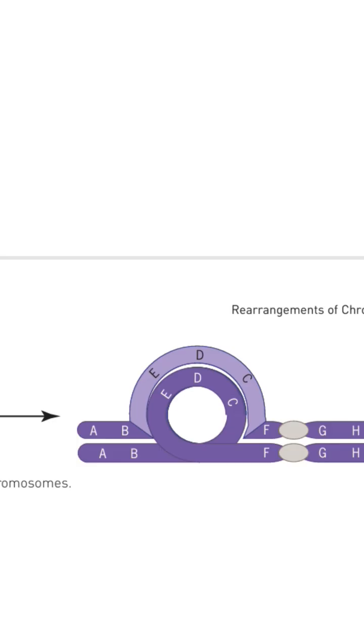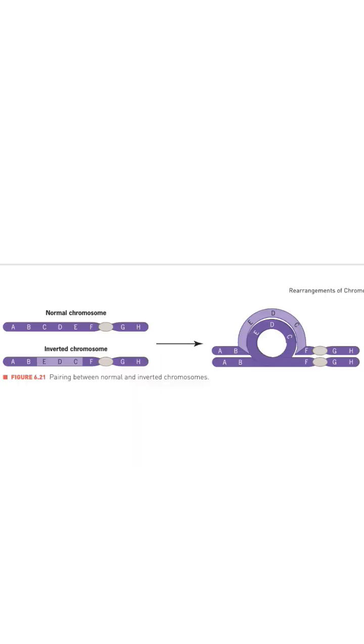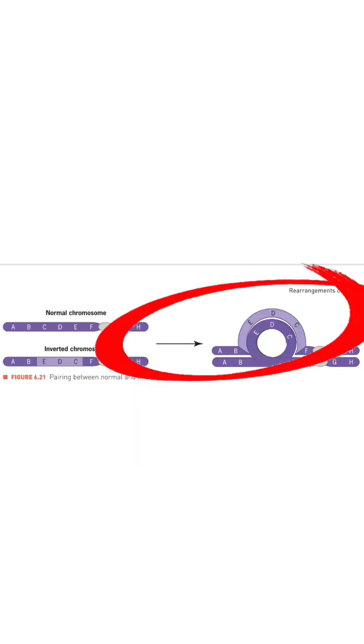However, because of the inversion, the chromosome must form a loop to allow for pairing in the region where genes are in reverse order. In this pairing configuration, only one of the chromosomes is looped and the other conforms around it.